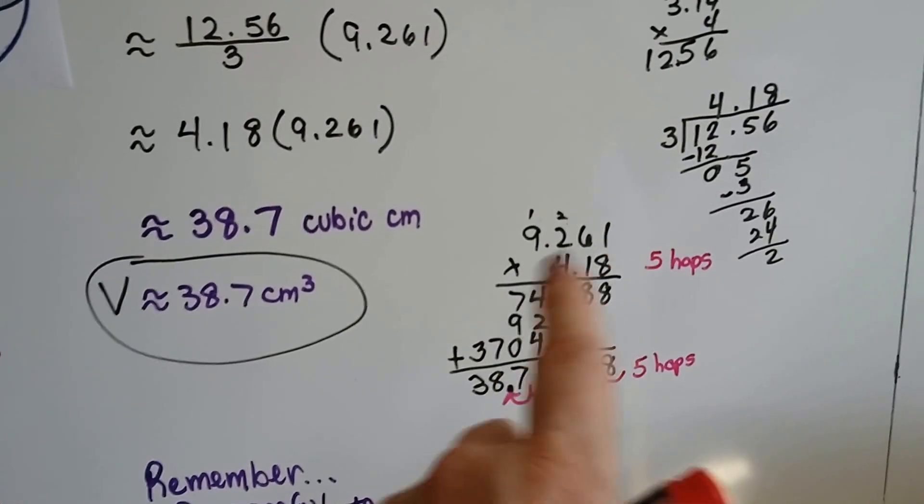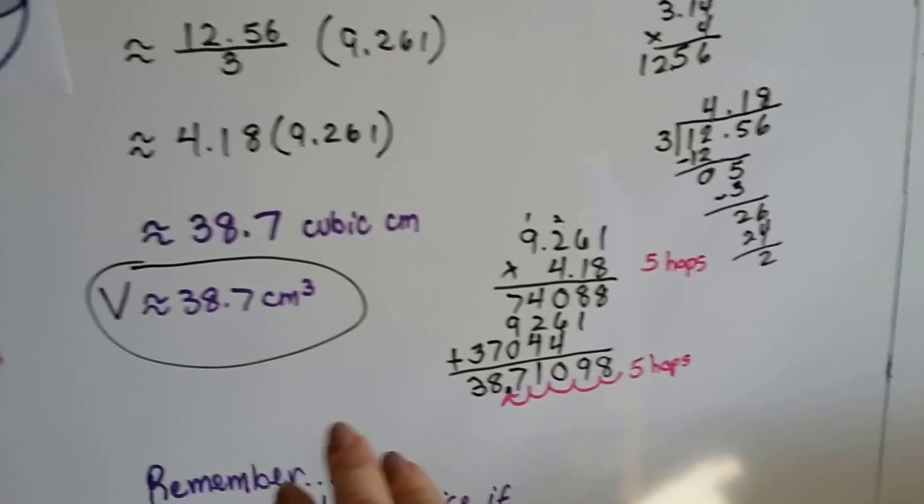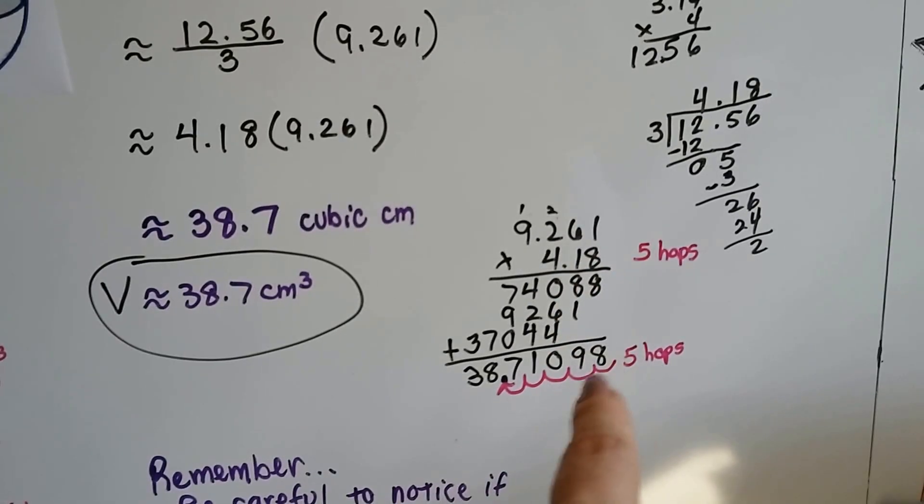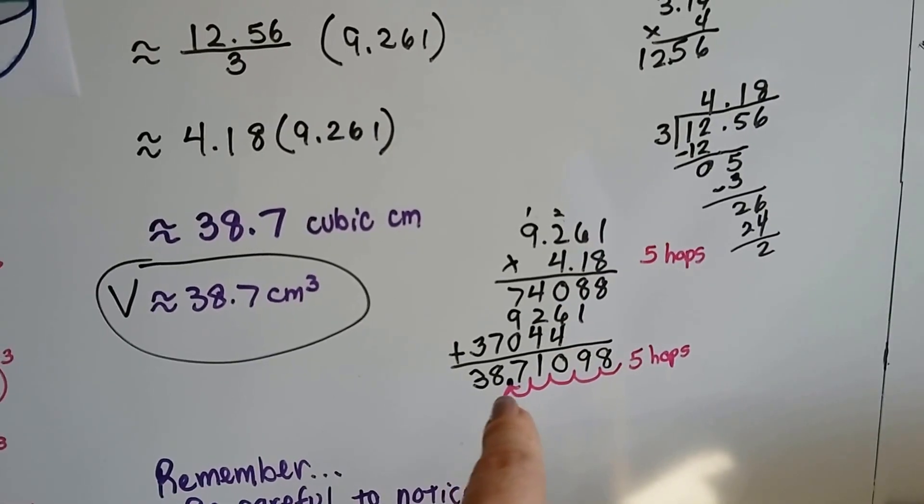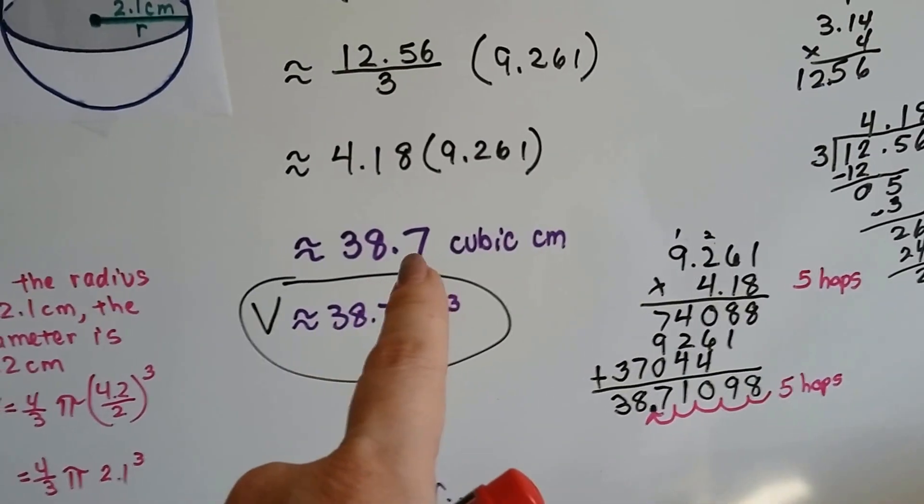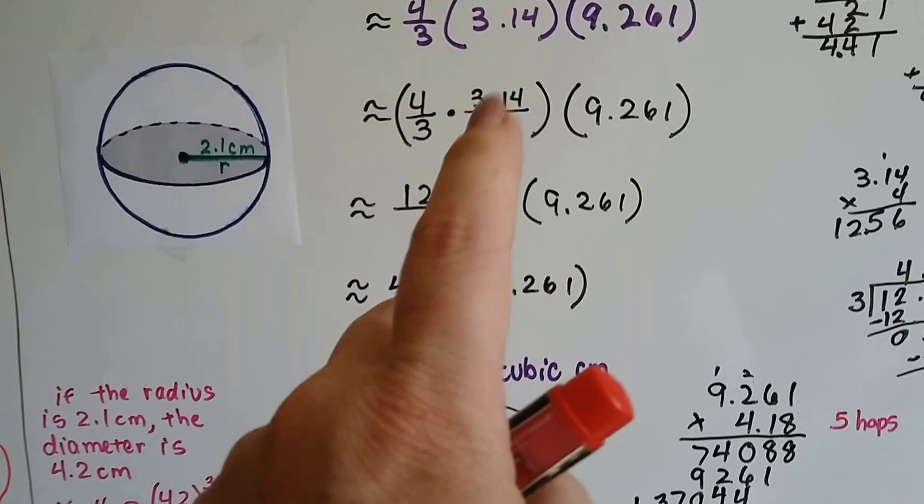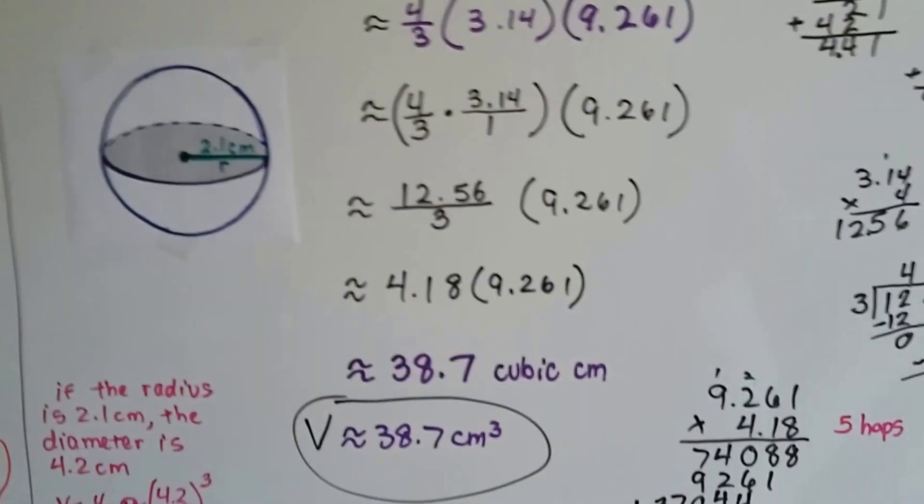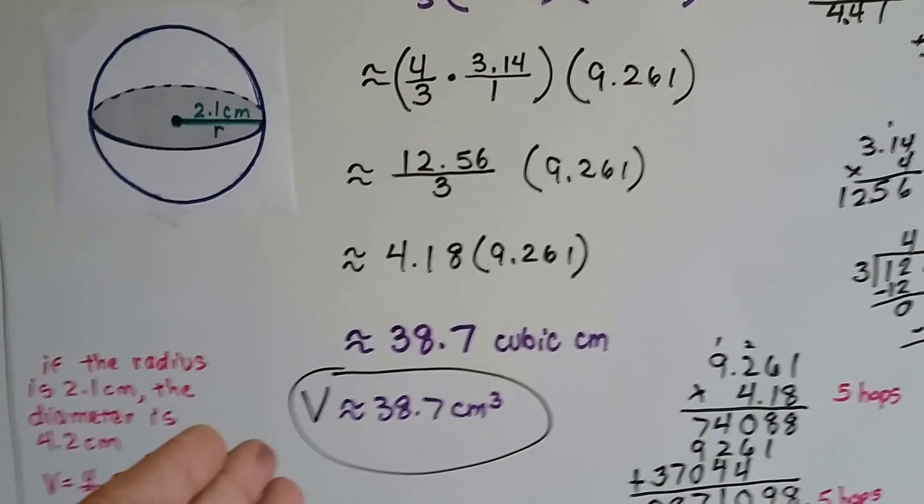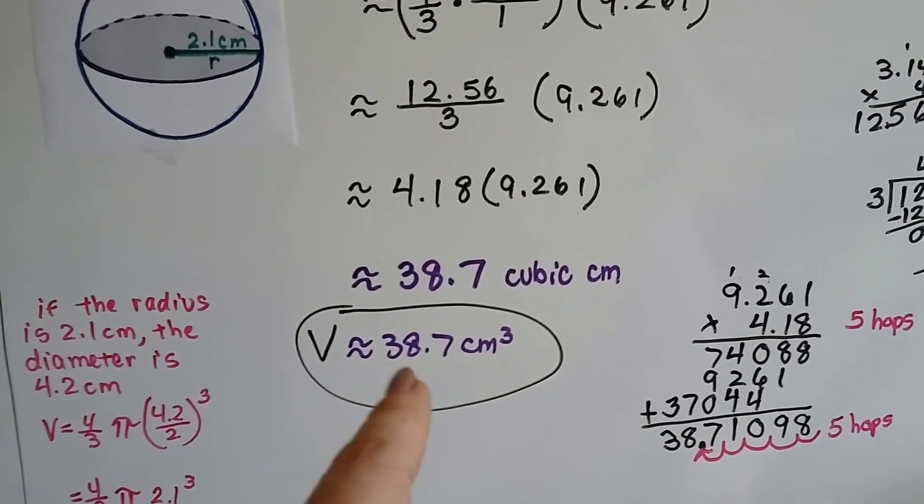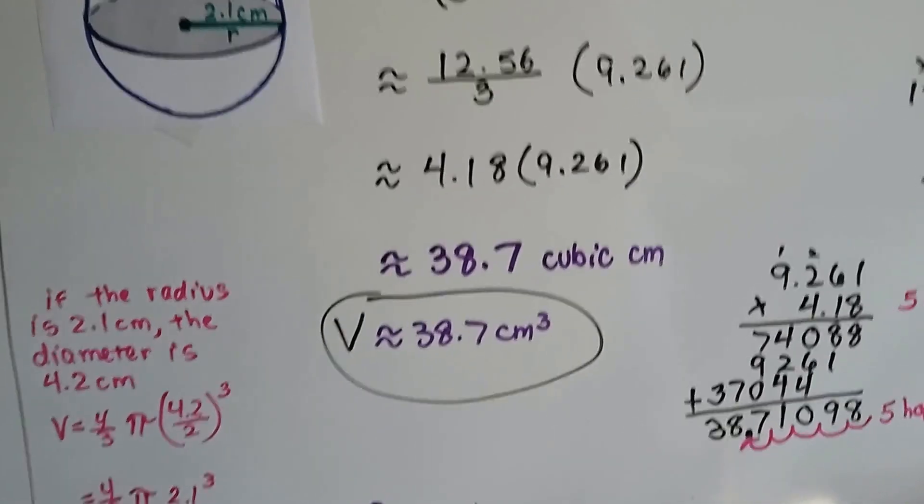So, I did this big multiplication. Didn't take very long. There's five decimal hops in the equation, so I put five decimal hops in the answer, and I got 38.7 to the nearest tenth. So, it's 38.7 cubic centimeters. Now, it's approximate because of pi. Remember, pi has so many digits. We just round it to 3.14, so there's no way that it's accurate. It's got to be approximate. So, that means the volume is 38.7 cubic centimeters.